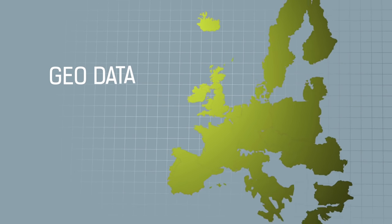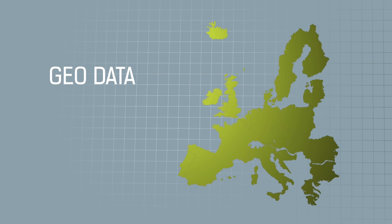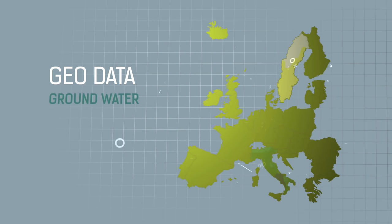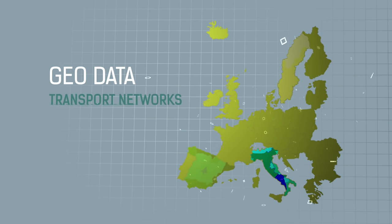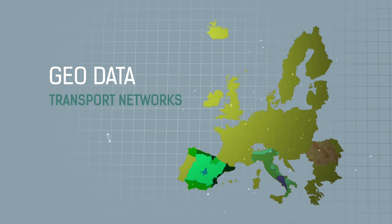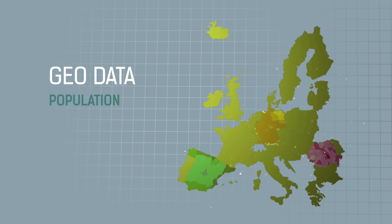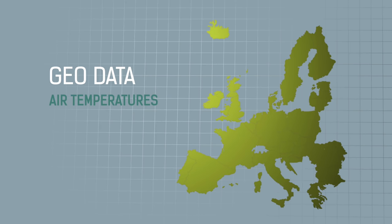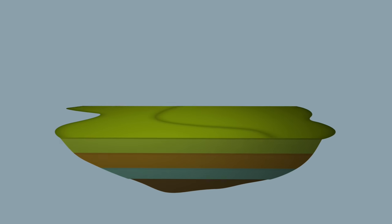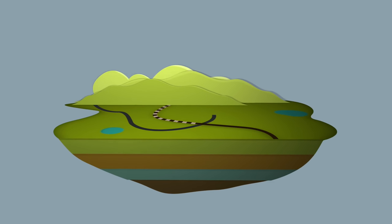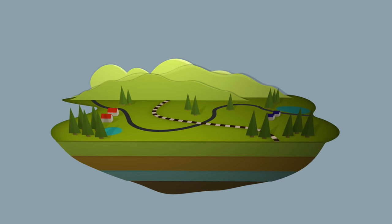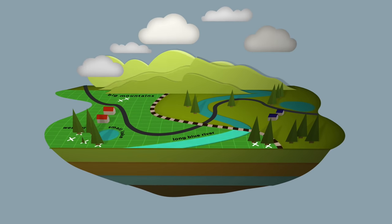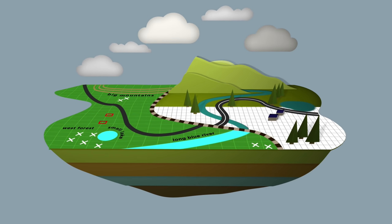All European countries make and use geospatial data, such as groundwater, transport networks, population, land use and air temperatures. And each country has its own specific way to describe this data.